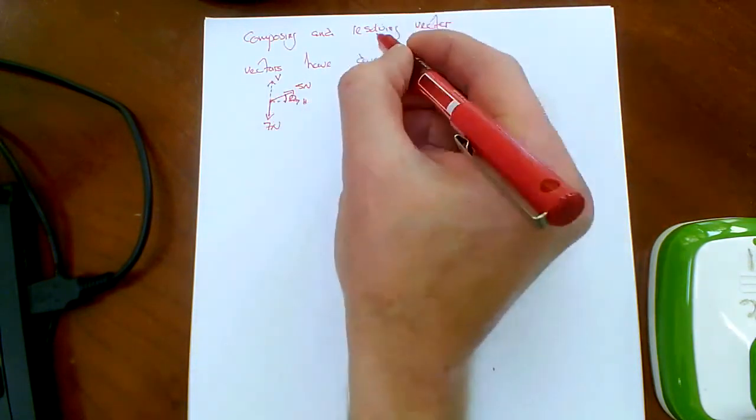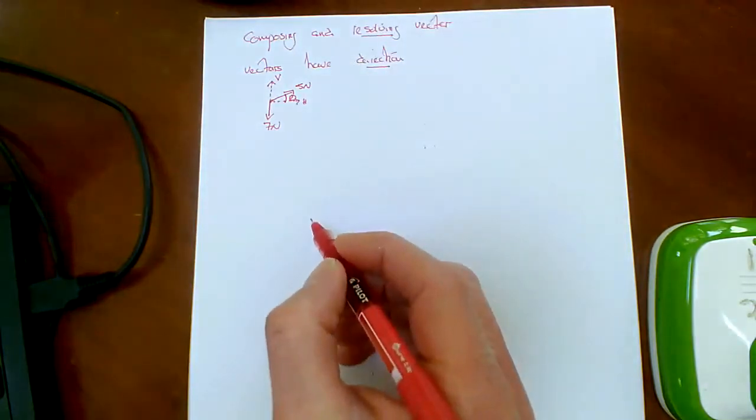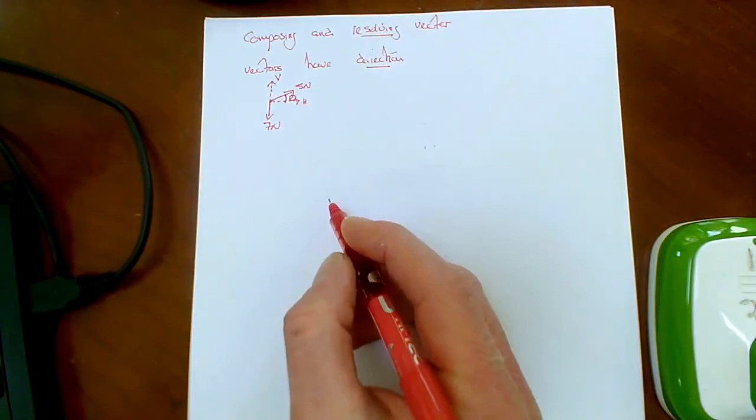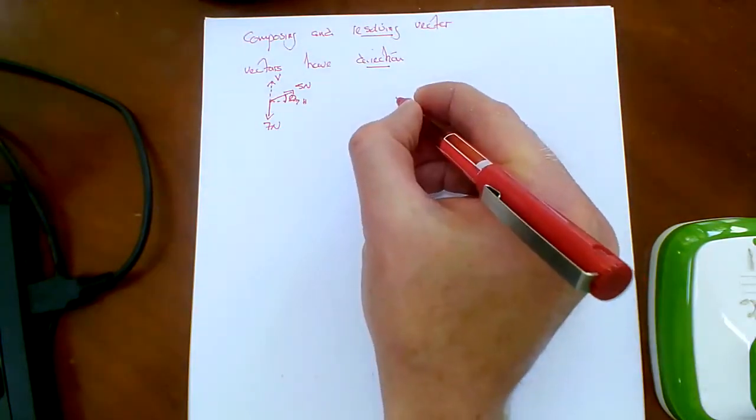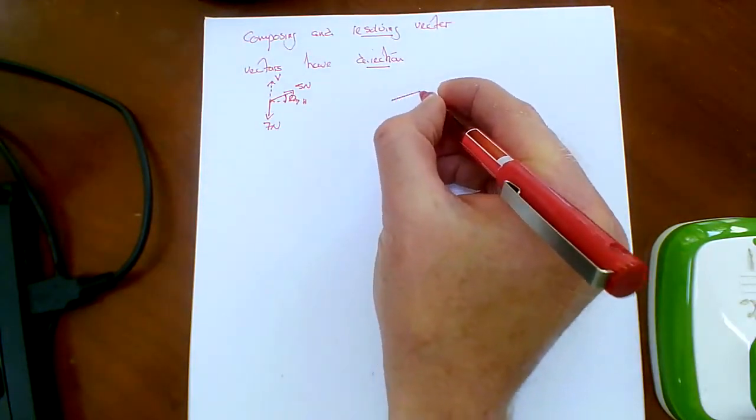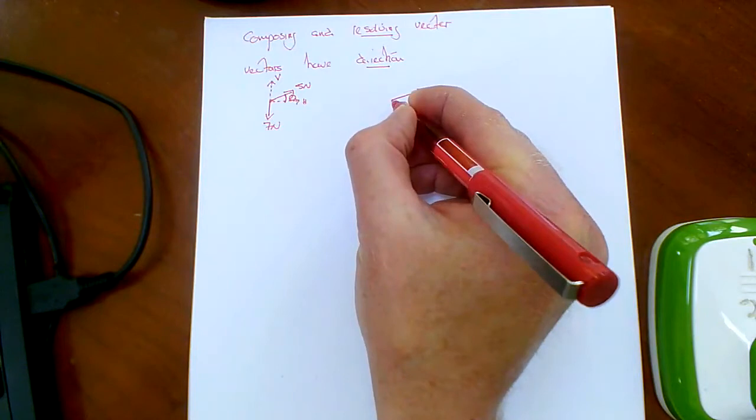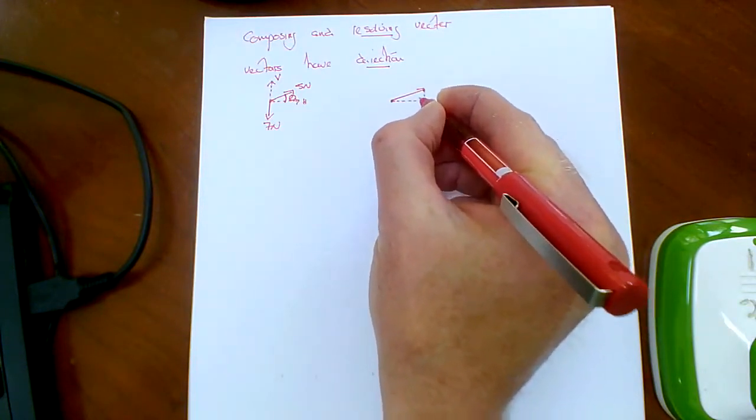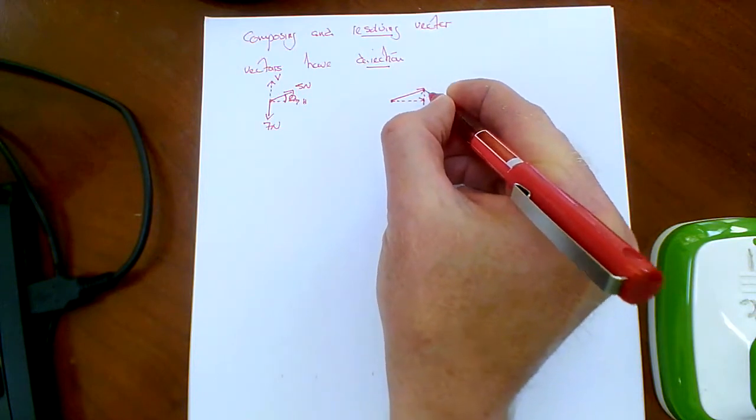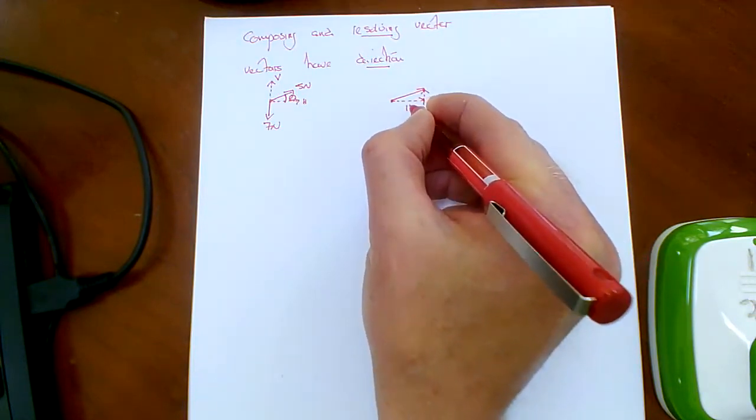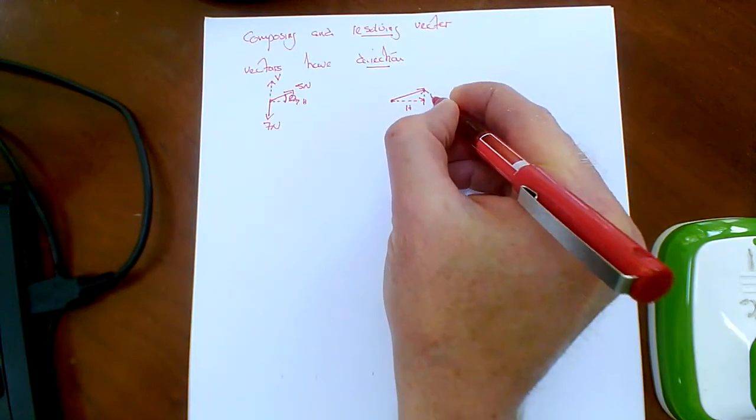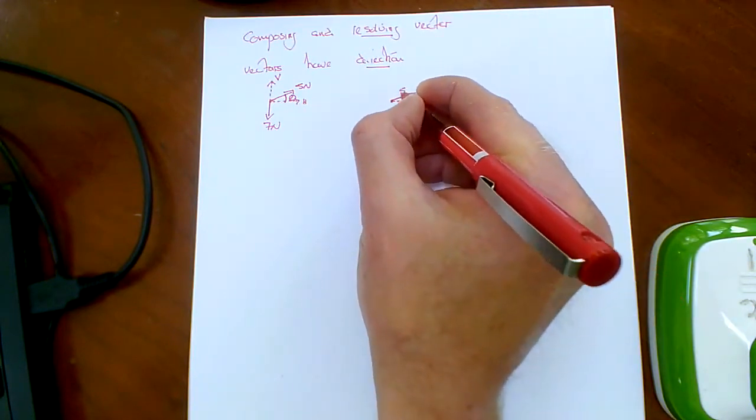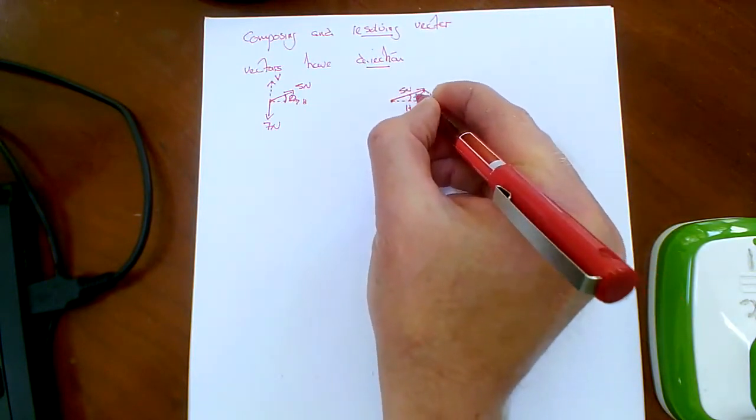You have to break this up into the bit that's acting vertically and the bit that's acting horizontally. This is your resolution. So how do you do that? Well, your 5 Newton at some angle theta has the same effect as these two. Call that horizontal and call that vertical.